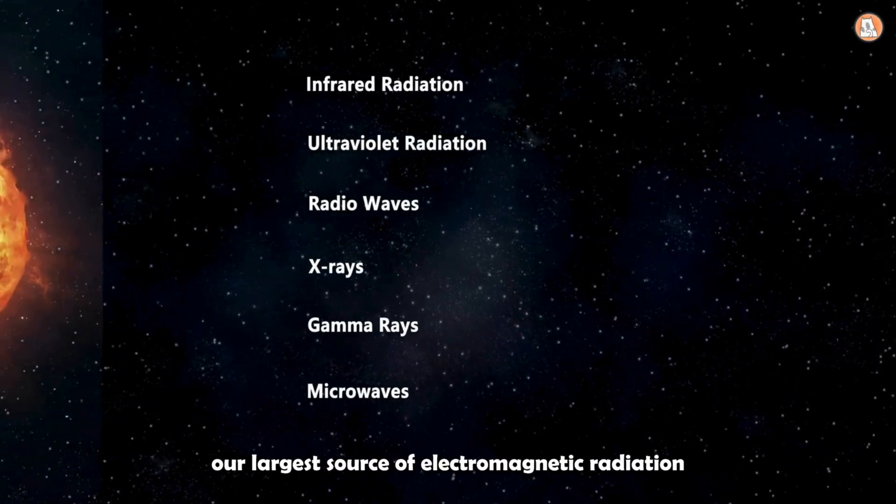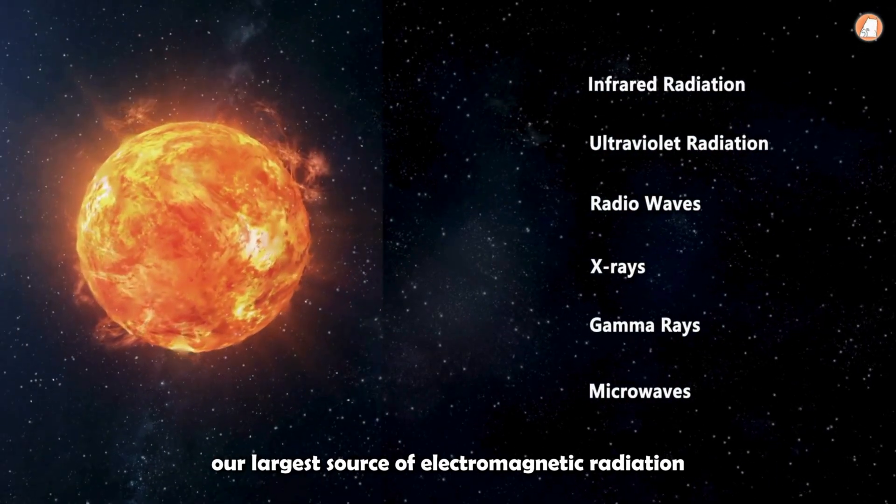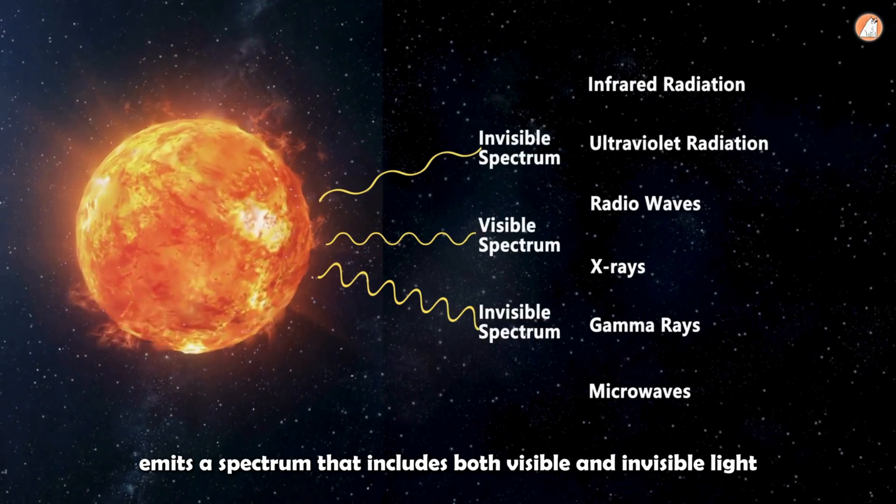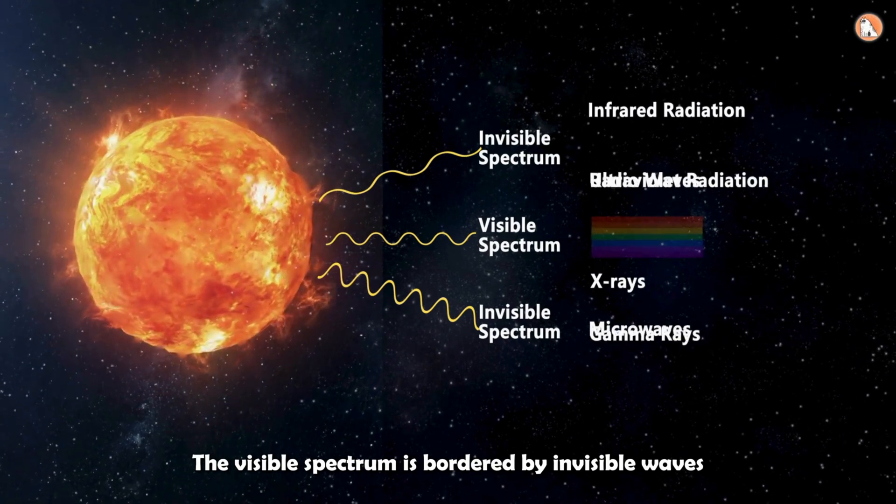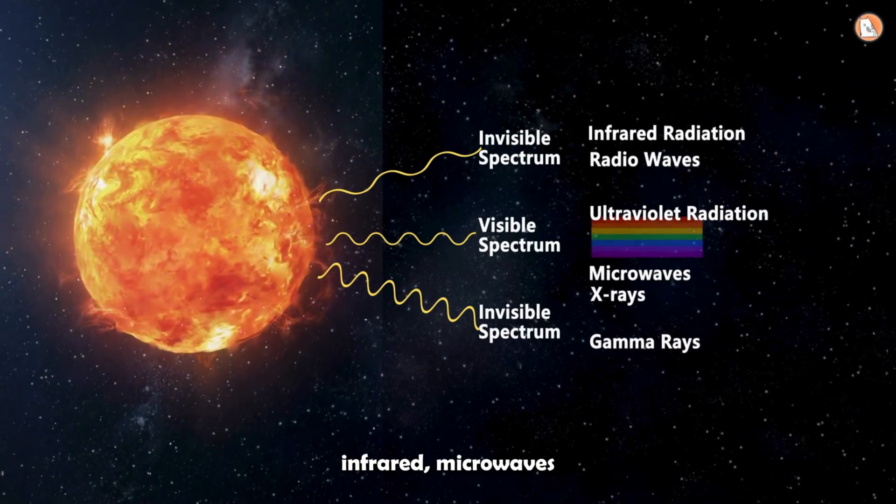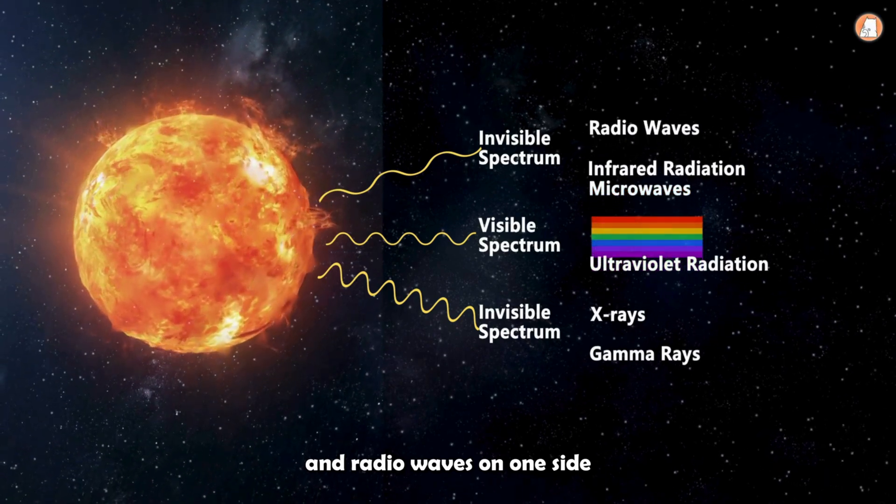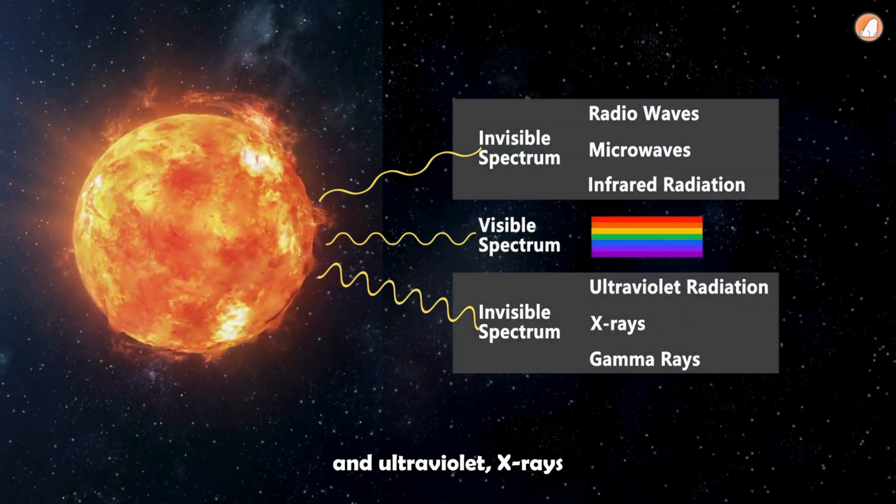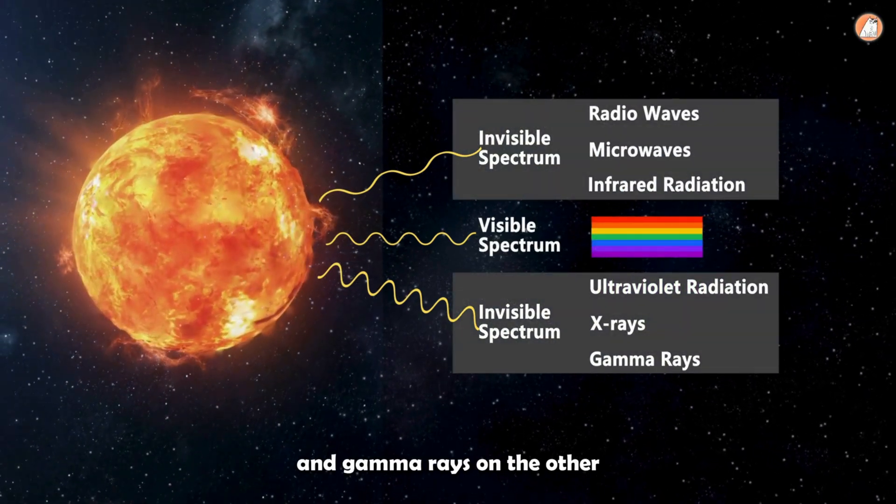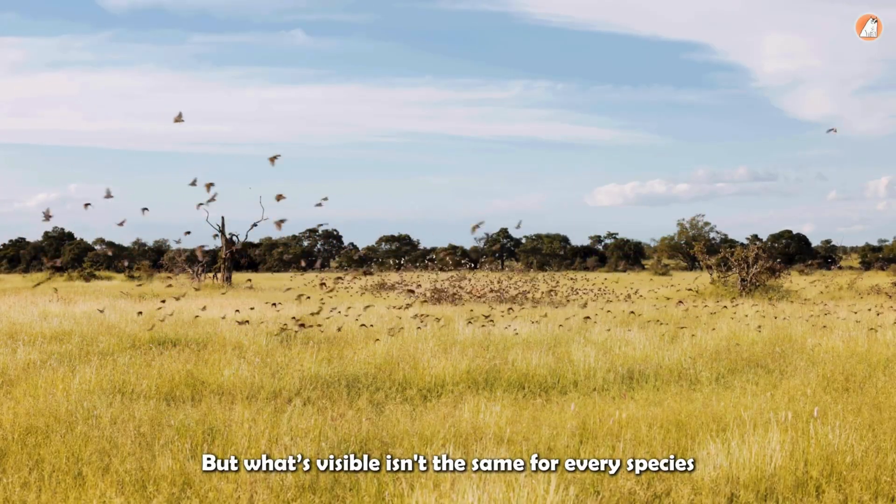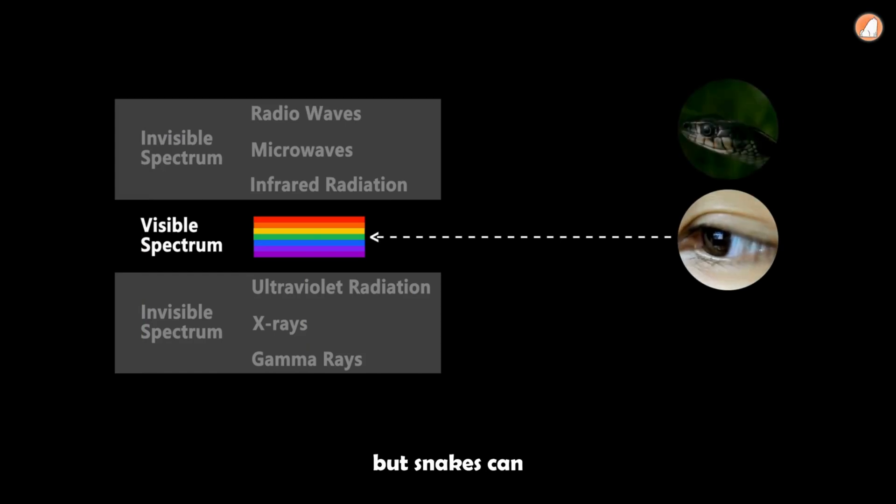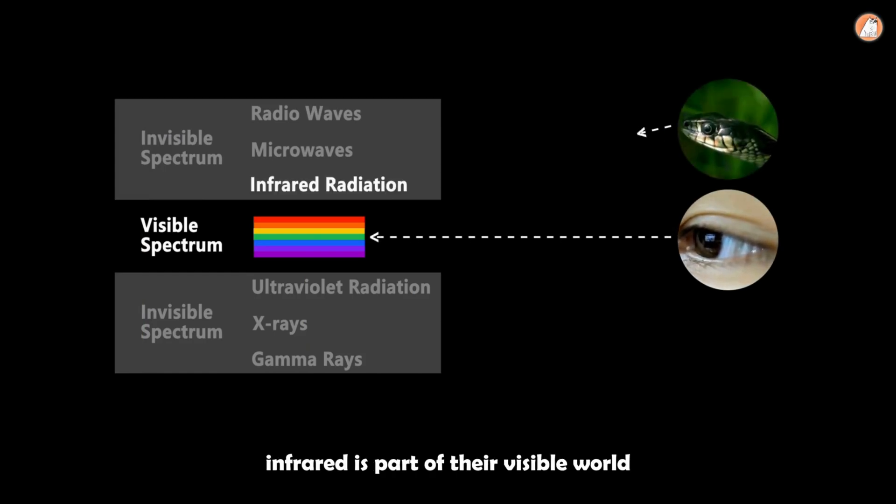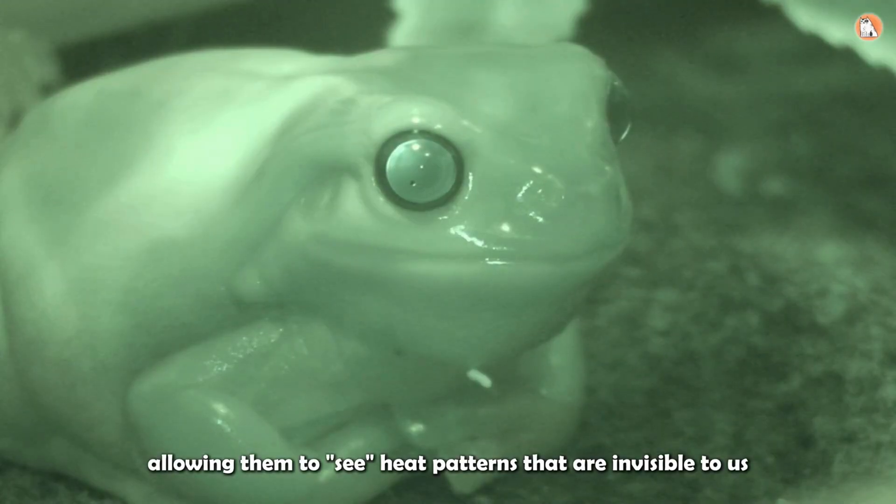The sun, our largest source of electromagnetic radiation, emits a spectrum that includes both visible and invisible light. The visible spectrum is bordered by invisible waves: infrared, microwaves, and radio waves on one side, and ultraviolet, X-rays, and gamma rays on the other. But what's visible isn't the same for every species. Humans, for example, can't see infrared light, but snakes can. For them, infrared is part of their visible world, allowing them to see heat patterns that are invisible to us.